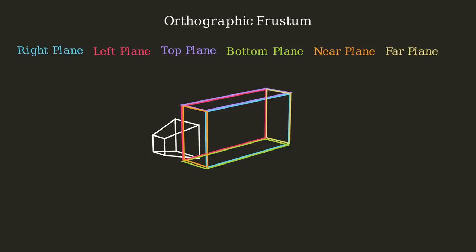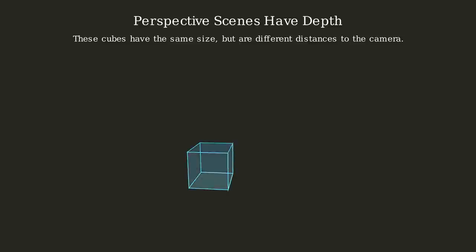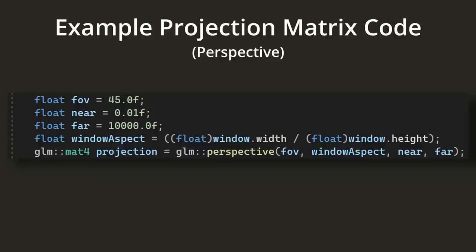For a 3D game, you would typically use a perspective matrix, which takes the perspective of the scene into account. This means that objects farther from the camera will look smaller, giving the scene a sense of depth. You can construct a perspective matrix in GLM by providing the field of view, the window's aspect ratio, and the near and far planes, and GLM will give you the appropriate projection matrix.